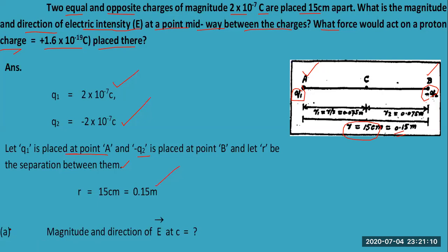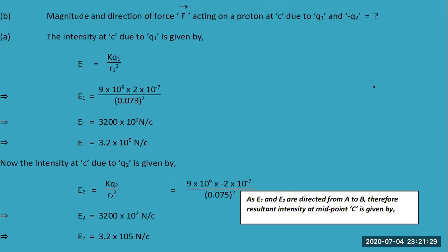What you are going to calculate first is the magnitude and direction of E at point C. This is point C, and you are going to calculate the magnitude of electric intensity at point C and its direction.